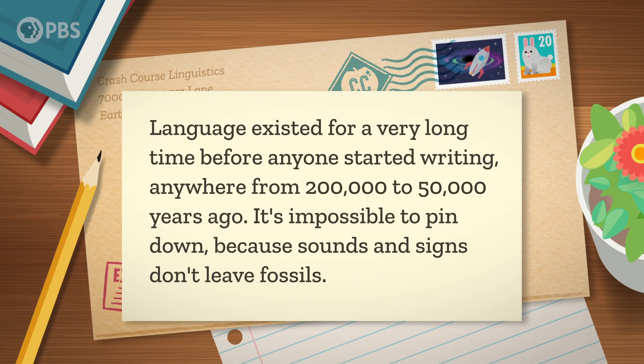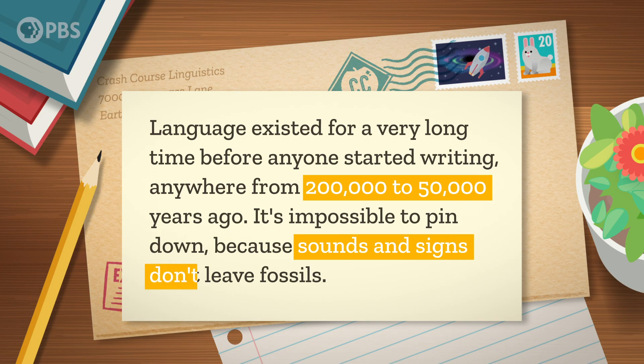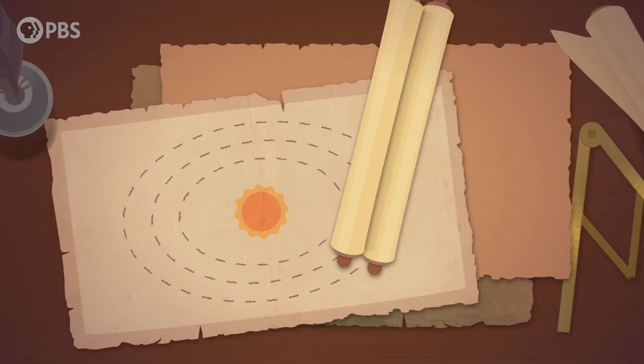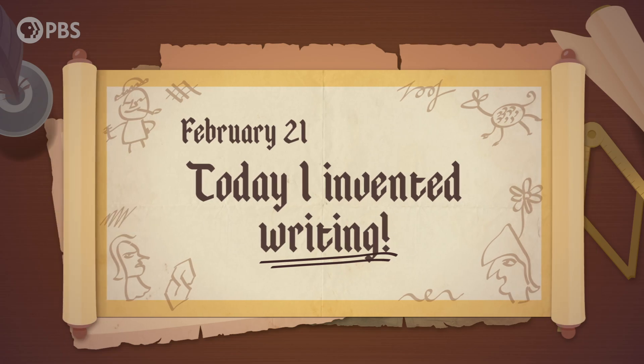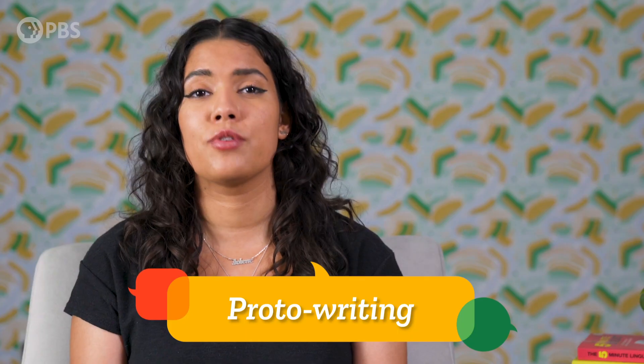Usually, the medium used to record a writing system influences the way it looks. Roman script was very angular because that was easy to carve into rock, while brushes used to write Chinese scripts influenced their flowing style. But language existed for a very long time before anyone started writing — anywhere from 200,000 to 50,000 years ago. It's impossible to pin down, because sounds and signs don't leave fossils. Writing is much more recent, but no one left us a written record saying 'Today I invented writing!' Archaeologists have found records of proto-writing, which uses symbols to represent specific meanings but not in whole strings like a sentence. As best we can tell, writing was only invented independently three times in human history, and each time the idea spread to other cultures, sometimes changing shape a lot along the way.